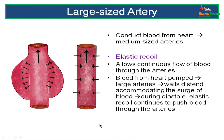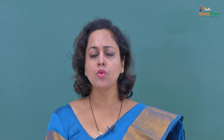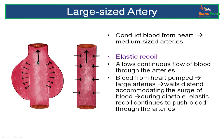These large sized arteries are close to the heart. During systole, blood is pushed into these vessels with high pressures. To accommodate these pressures, the lumen of the artery increases as the walls bulge. As diastole takes place and pressures in the heart drop, the lumen comes back to normal by a feature called elastic recoil. This maintains the steady flow of blood through the conducting arteries.